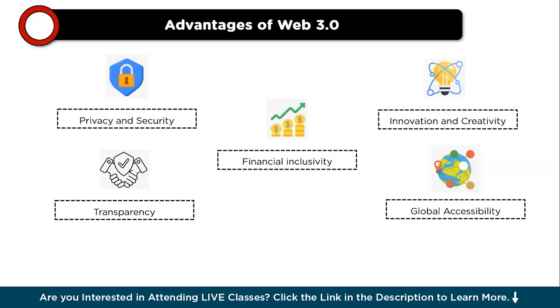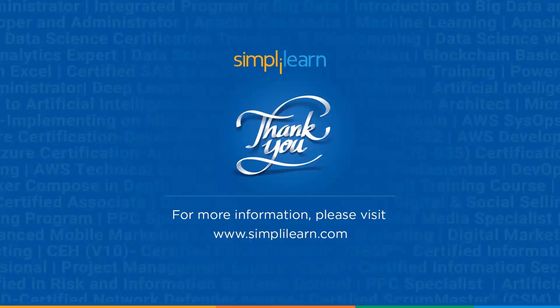As we conclude our exploration of Web 3.0, we have journeyed through the evolution from Web 1 to Web 2 and now to the decentralized landscape of Web 3.0. We've unraveled the distinctions between Web 2.0 and its decentralized successor, delving into the technologies that underpin Web 3.0 and its features — from enhanced privacy and financial inclusivity to innovative applications like DeFi and NFTs. Web 3.0 offers a transformative vision for the future of the internet. Thanks for watching — stay safe and keep learning.